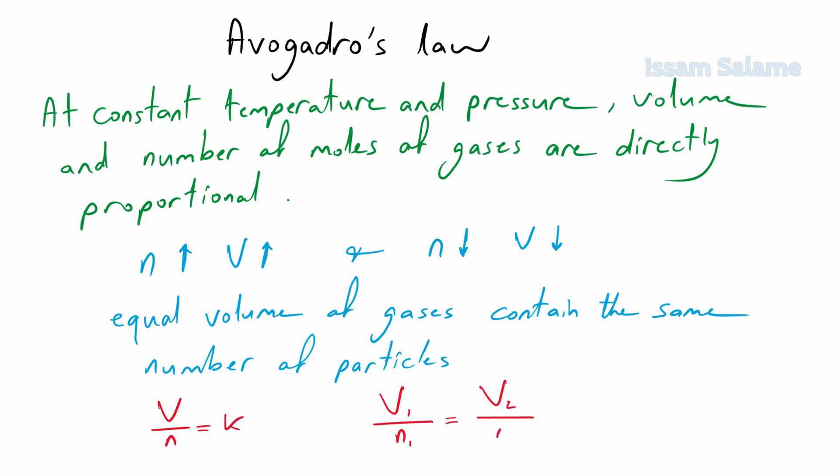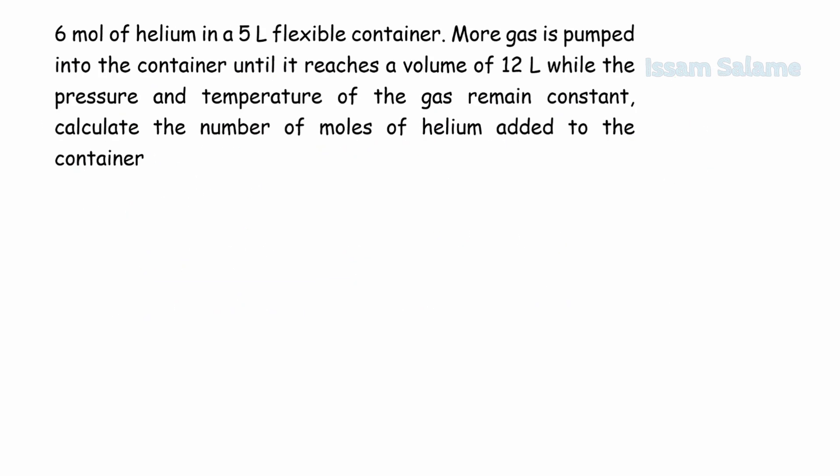V1 over n1 equals V2 over n2. Initial volume divided by number of moles initial equals final volume divided by the final number of moles. Now I will solve an exercise about Avogadro's law.